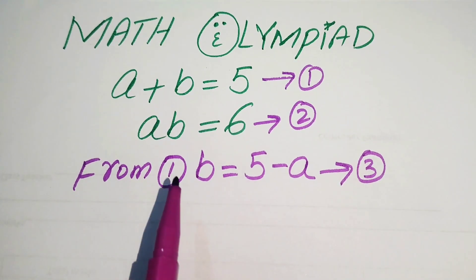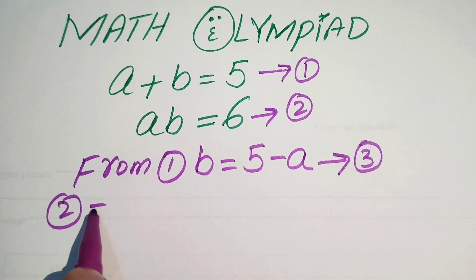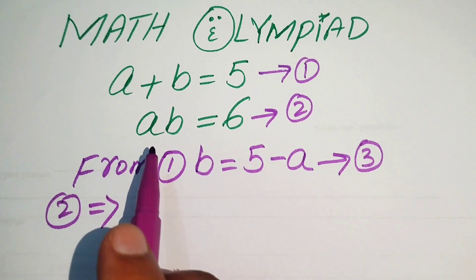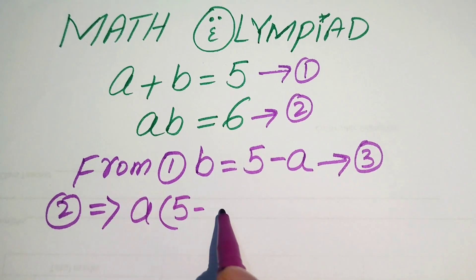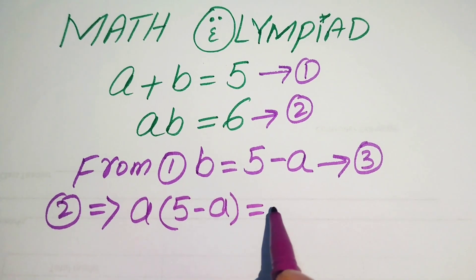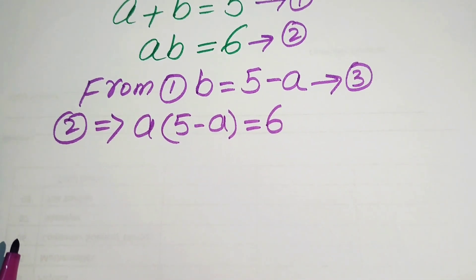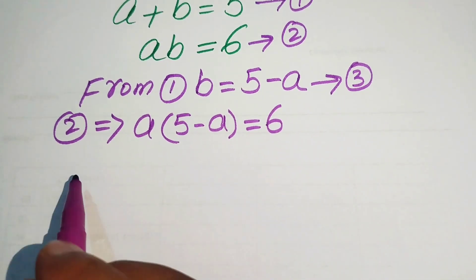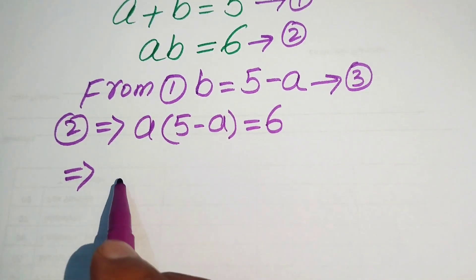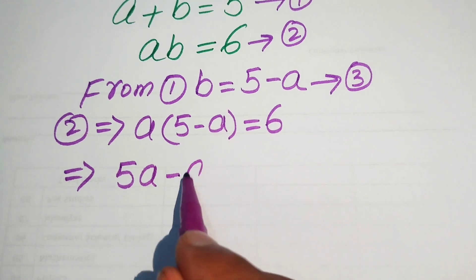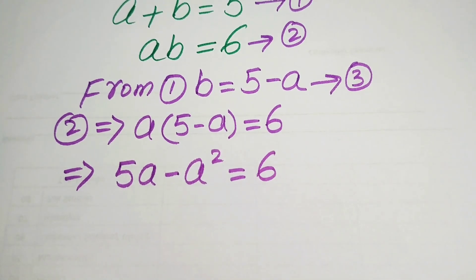We use this value of b in equation number 2. So equation number 2 becomes a times (5 minus a) equals 6. Multiplying a through both terms gives us 5a minus a squared equals 6.